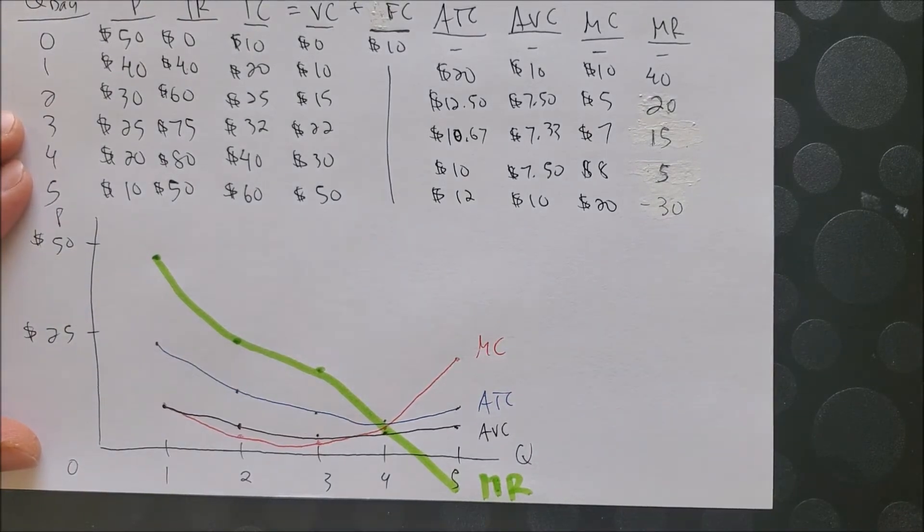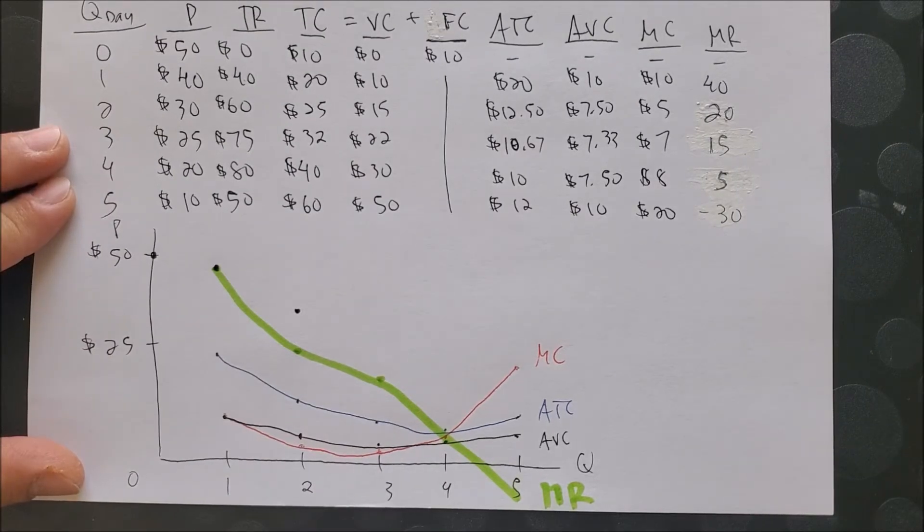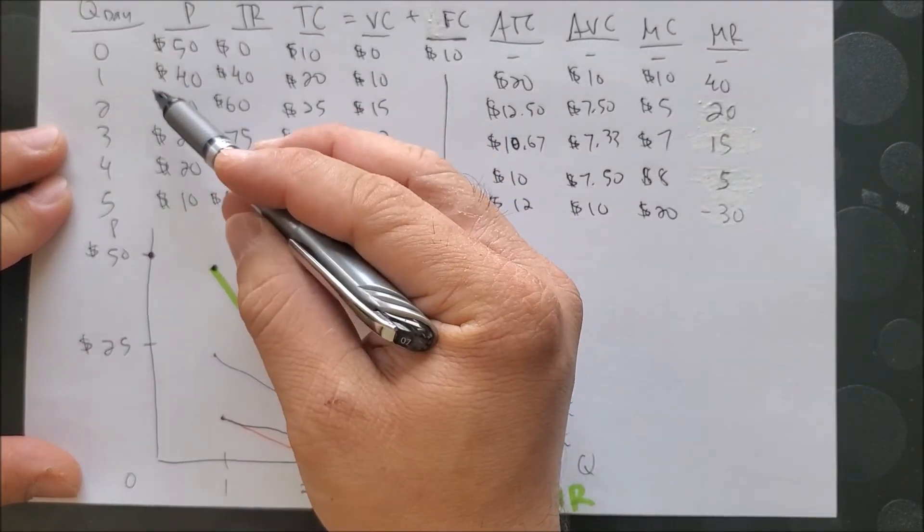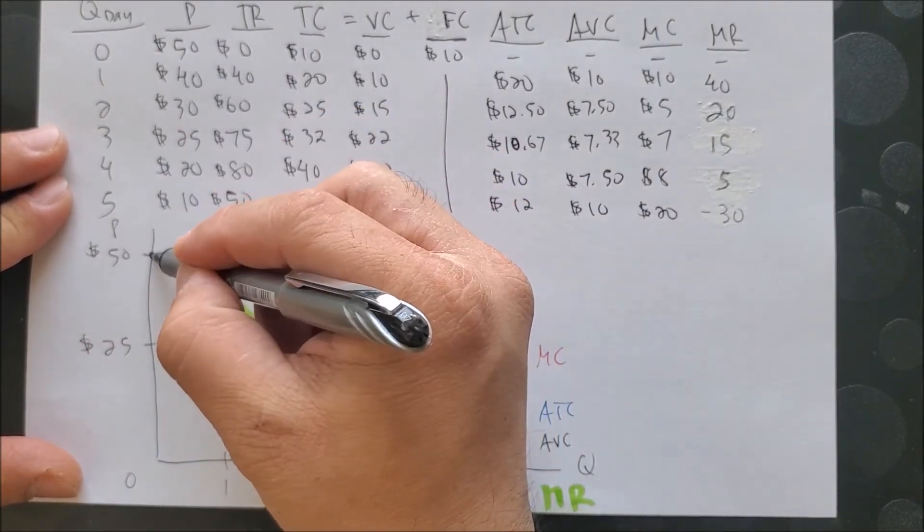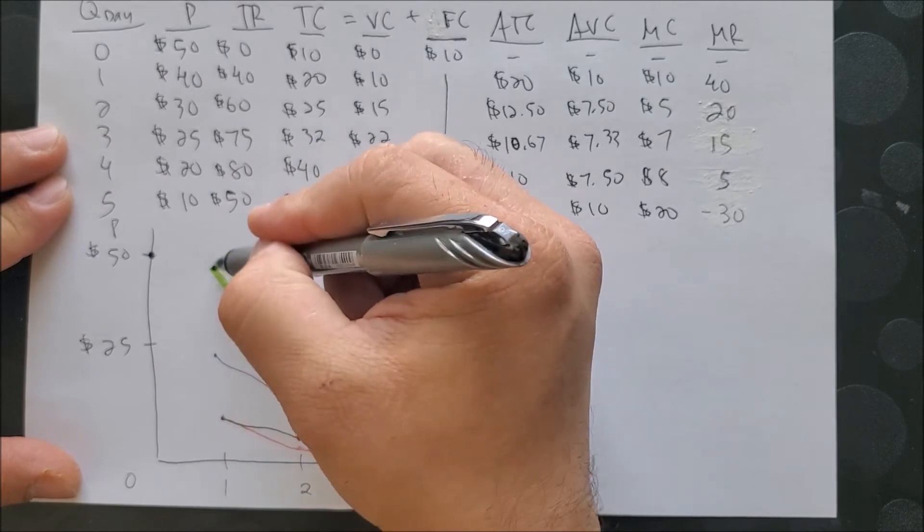And now we can go ahead and draw PRICE. So now we can go ahead and graph the PRICE. In this case, we have 0 and 50 as such, 1 and 40.